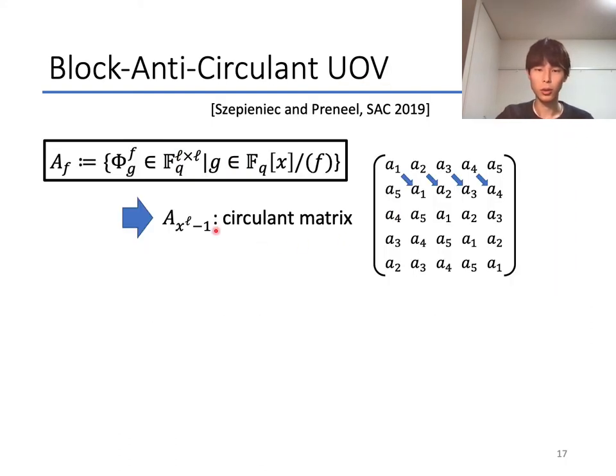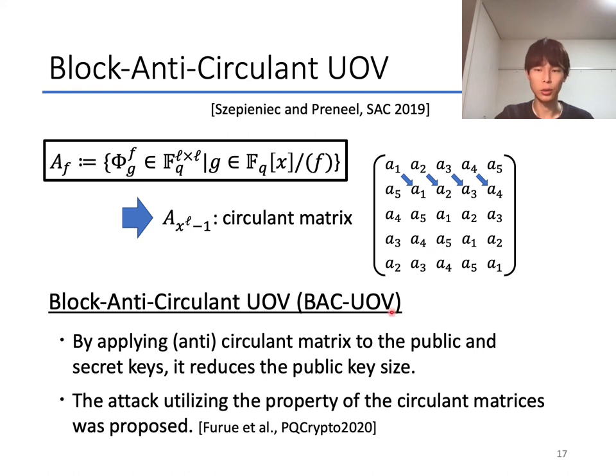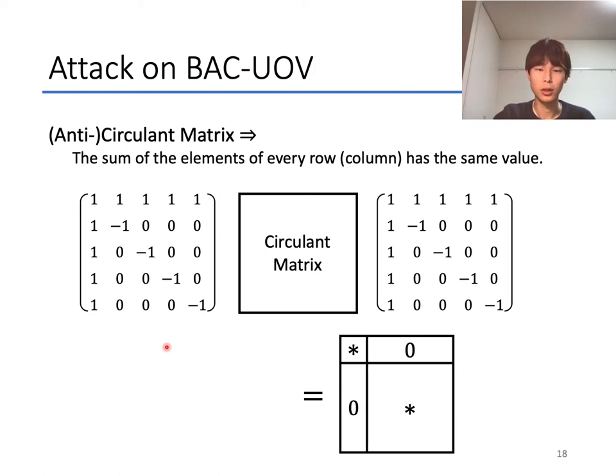In the case of f equals x^ℓ - 1, then the matrix Φ_g^f is a circulant matrix like this. Actually, there exists a variant of UOV using circulant matrices, which is called Block Anti-Circulant UOV, BAC-UOV. BAC-UOV reduces the public key size by applying these circulant matrices. But the attack utilizing the property of the circulant matrices was proposed in 2020.